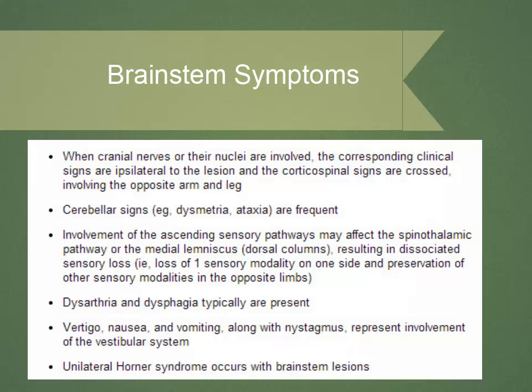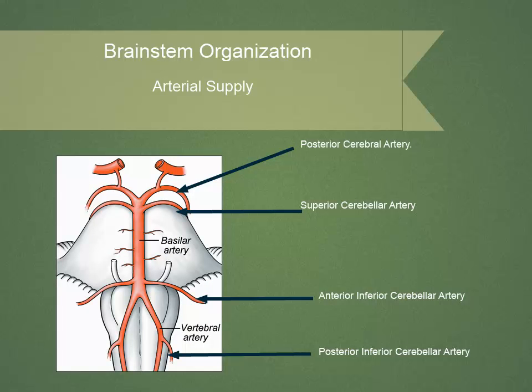If you see these recognizable signs, you'll have a very high index of suspicion that one is dealing with a brainstem problem. Since many brainstem lesions happen to be vascular, it's handy to know the basic vascular supply. Coming from the vertebral-basilar system, the first branches off the vertebrals are the posterior inferior cerebellar arteries (PICA), then as the basilar is formed, the anterior inferior cerebellar artery (AICA) is seen, then the superior cerebellar arteries, and finally the bifurcation of the basilar into the two posterior cerebral arteries.